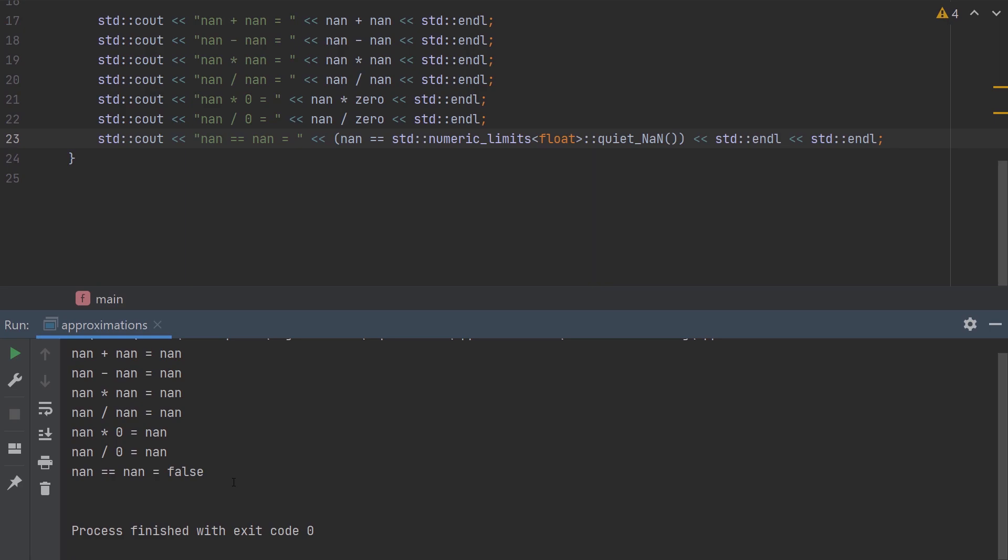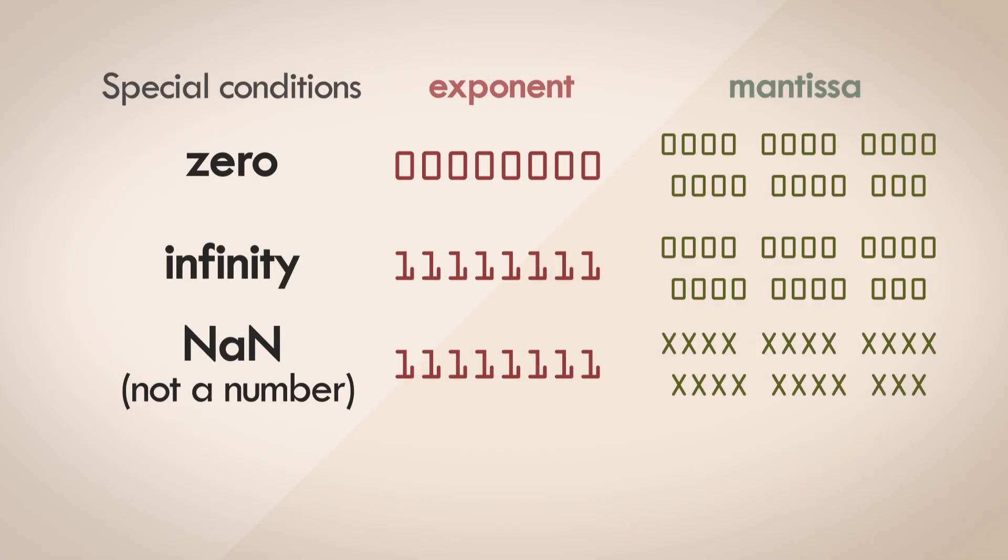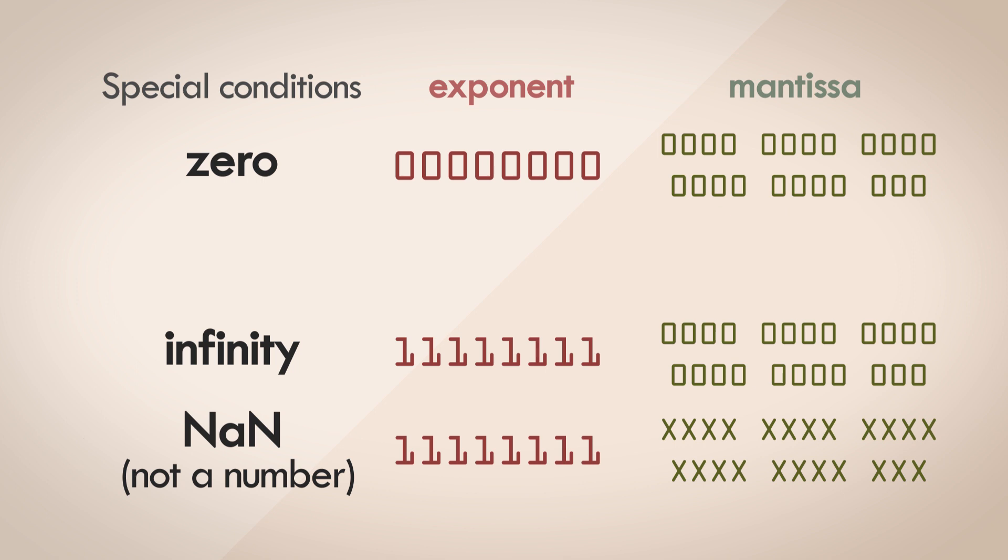So let's finally go back to the list of special conditions we've seen in this video. You can see that there's one condition that's possibly missing. What happens when the exponent is all zeros and the mantissa isn't? I've deliberately excluded this till the end because this is not a very easy topic to talk about and probably something that you wouldn't encounter very often.